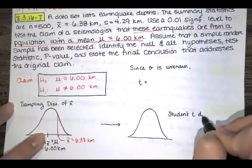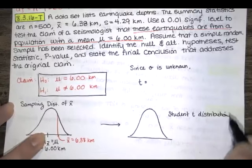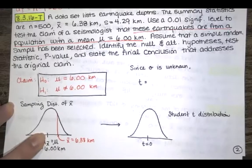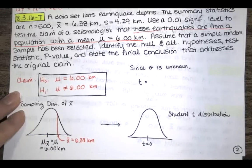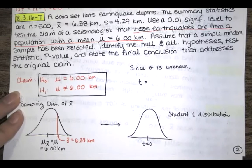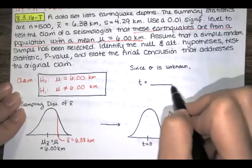Student T distributions look very similar to a standard normal distribution — they have a mean equal to 0, but the standard deviation is not equal to 1 like the standard normal; it's a little bit larger, meaning more spread out. We want to convert from the X-bar value to the corresponding T value using the T score formula.